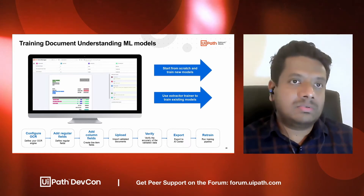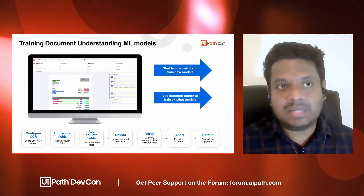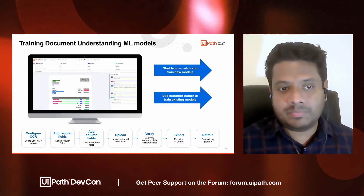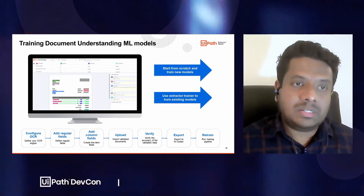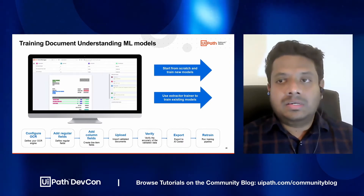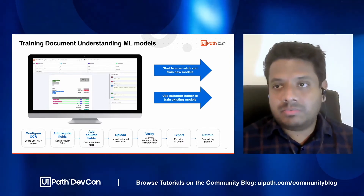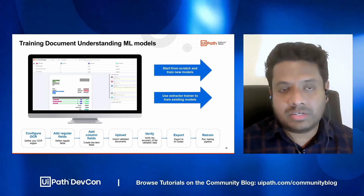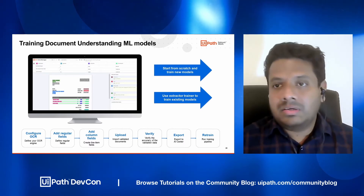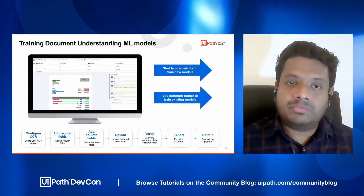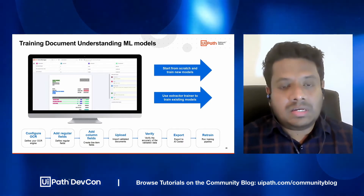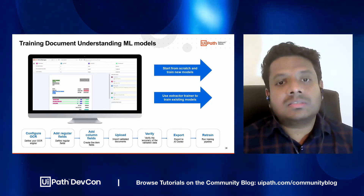First, you need to create a dataset in AI Center and create a data labeling session so that you can get access to Data Manager. Once you have access to Data Manager, the first step is to configure your OCR engine. You have to decide what's the best suitable OCR engine for your scenario and configure it accordingly. Note that Data Manager supports multiple OCR engines. Once that is done, you can create the fields that you need to extract along with the data types.